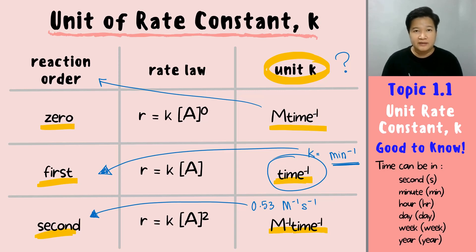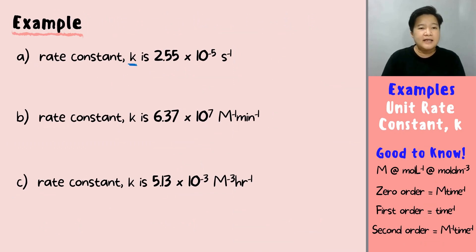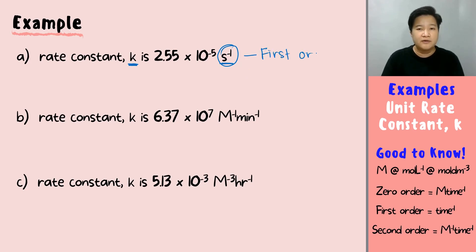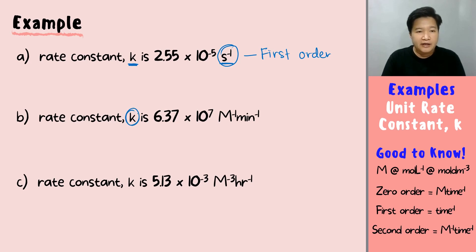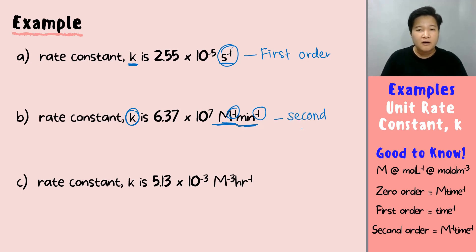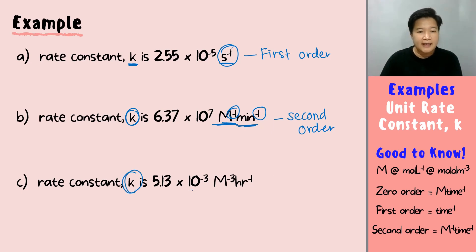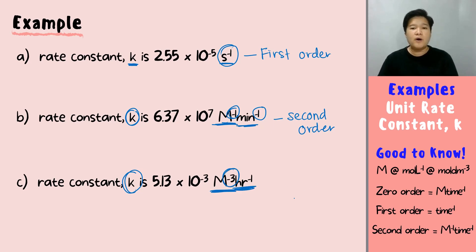Let's try some examples. If the rate constant given is 2.55 × 10⁻⁵ s⁻¹, looking at s⁻¹ you already know that is a first order reaction. Next, if the unit of k is M⁻¹ min⁻¹ — M⁻¹ time⁻¹ — that is straightaway a second order reaction.